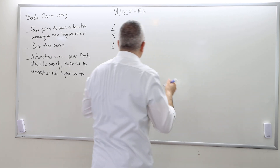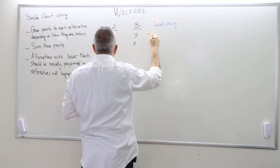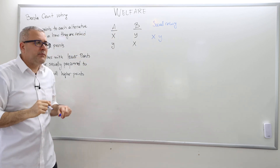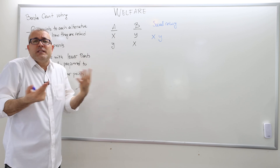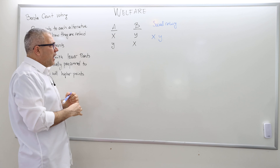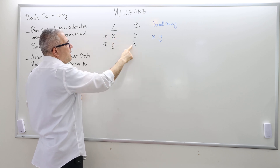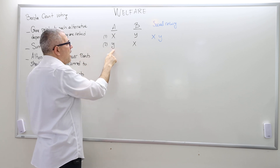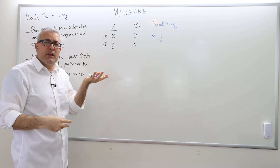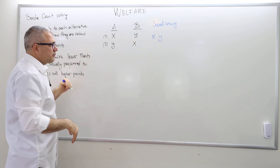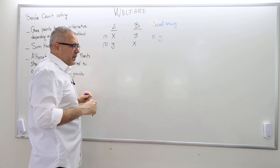According to Borda count, what is the social ranking between X and Y? X receives one point from agent A and two points from agent B: one plus two equals three points. Y receives two points from agent A and one point from agent B: two plus one equals three points. Both alternatives receive three points, so X and Y are socially indifferent — there is a social tie.